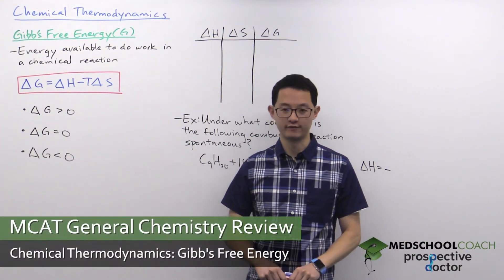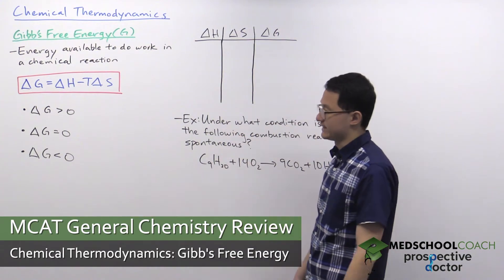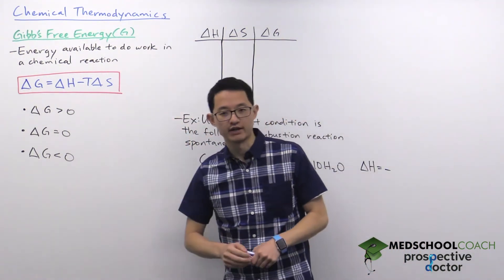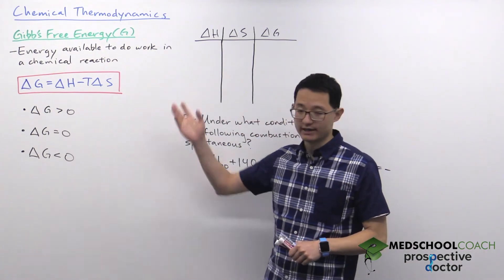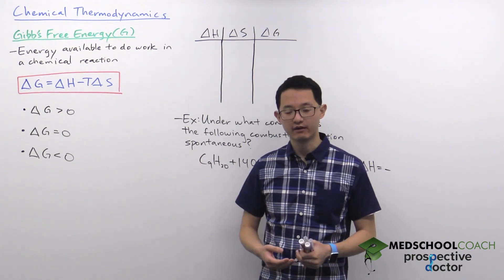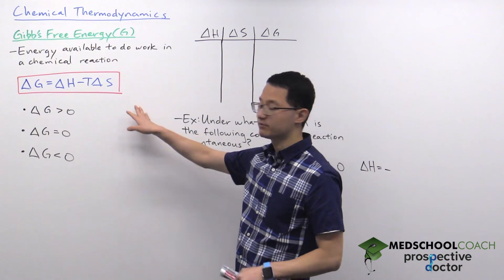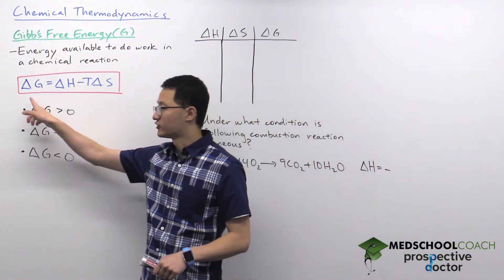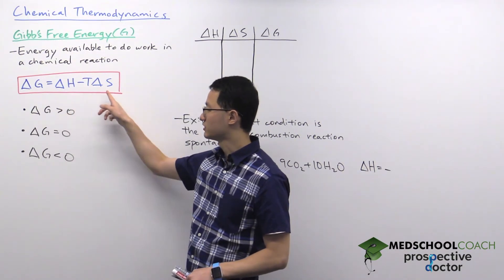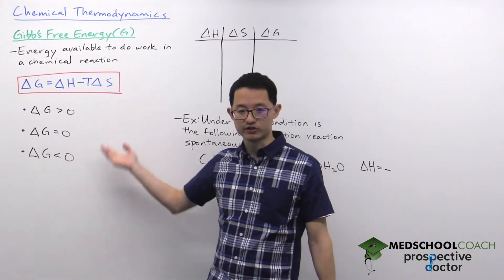In this video we're going to cover free energy. Gibbs free energy is defined as the energy available to do work in a chemical reaction. On the MCAT we usually care about the Gibbs free energy change, which can be calculated by this equation: the change in free energy is equal to the enthalpy change minus the product of temperature times entropy change.